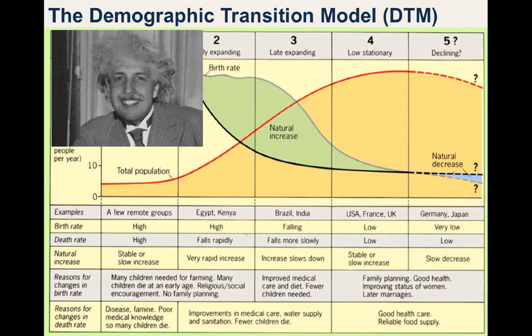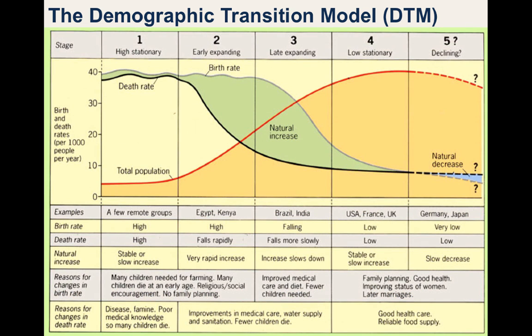Knowing the Demographic Transition Model and understanding how and why countries progress through the different stages is of paramount importance in understanding our modern world. Countries like Brazil, India, and China have been rapidly advancing through the DTM, whereas many sub-Saharan African states have been seemingly stuck in Stage 2 for decades. How future trends will progress depends on conditions at local, national, and global scales.